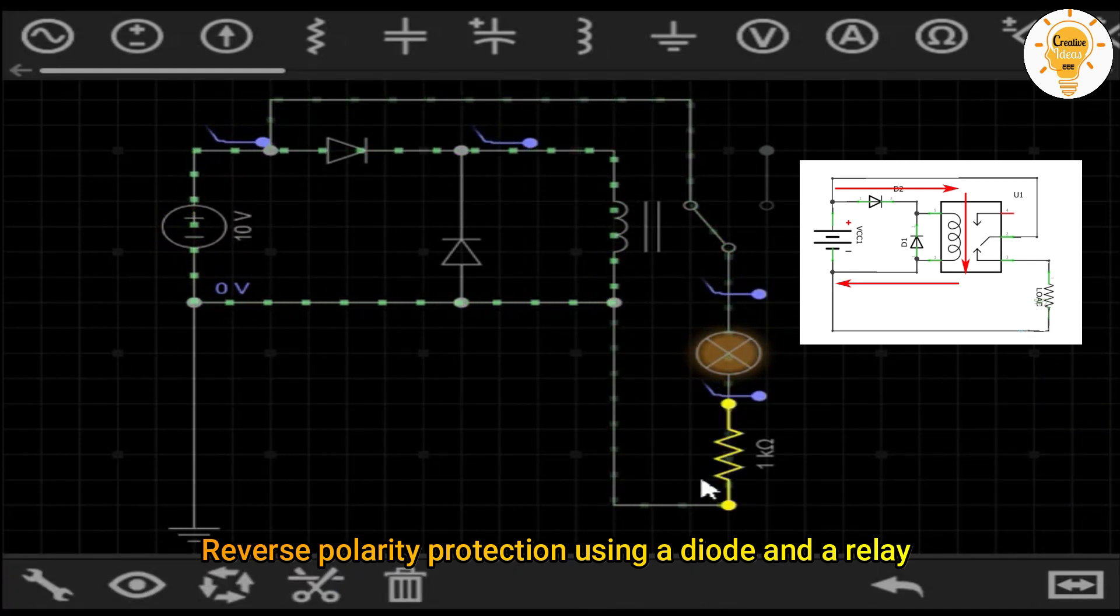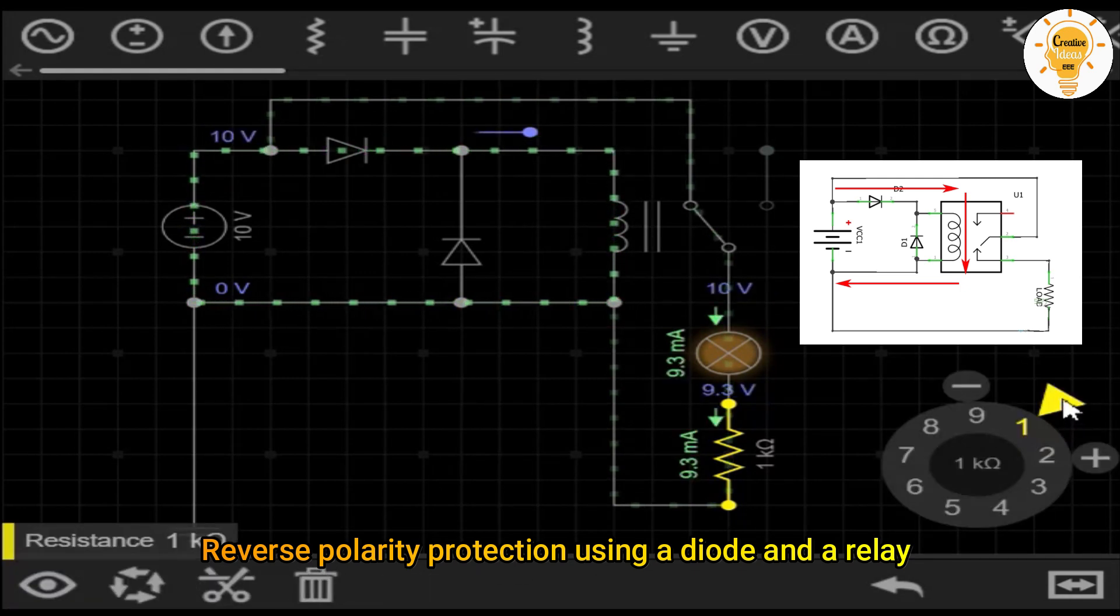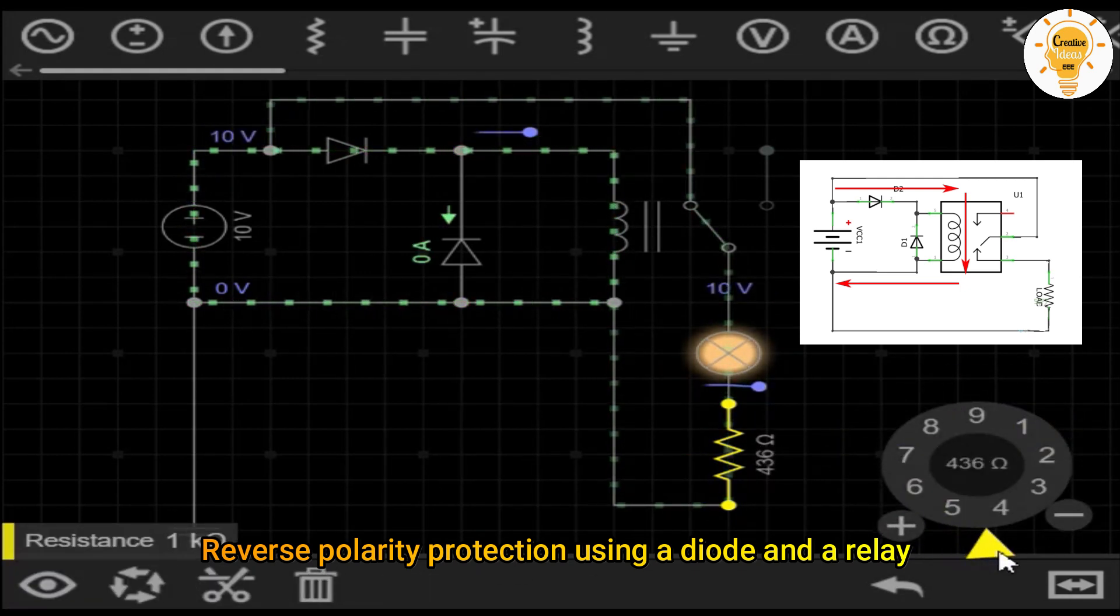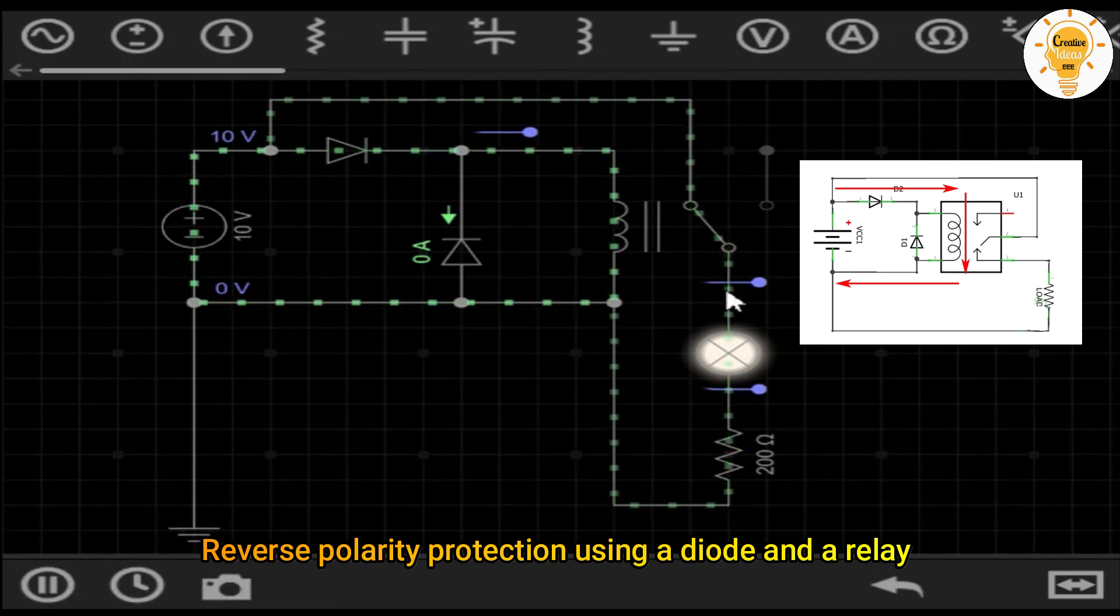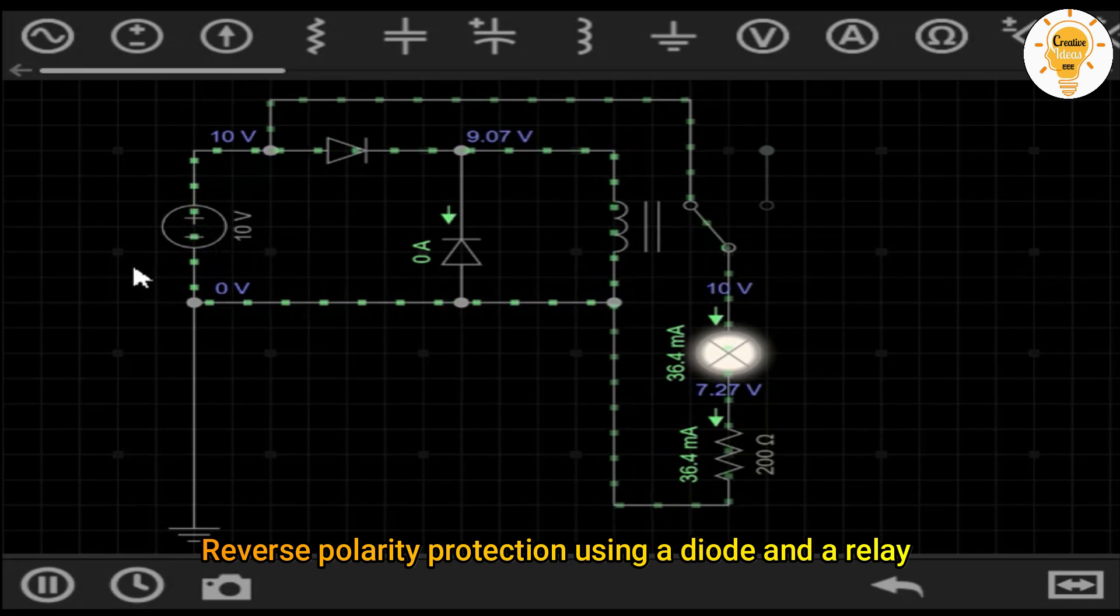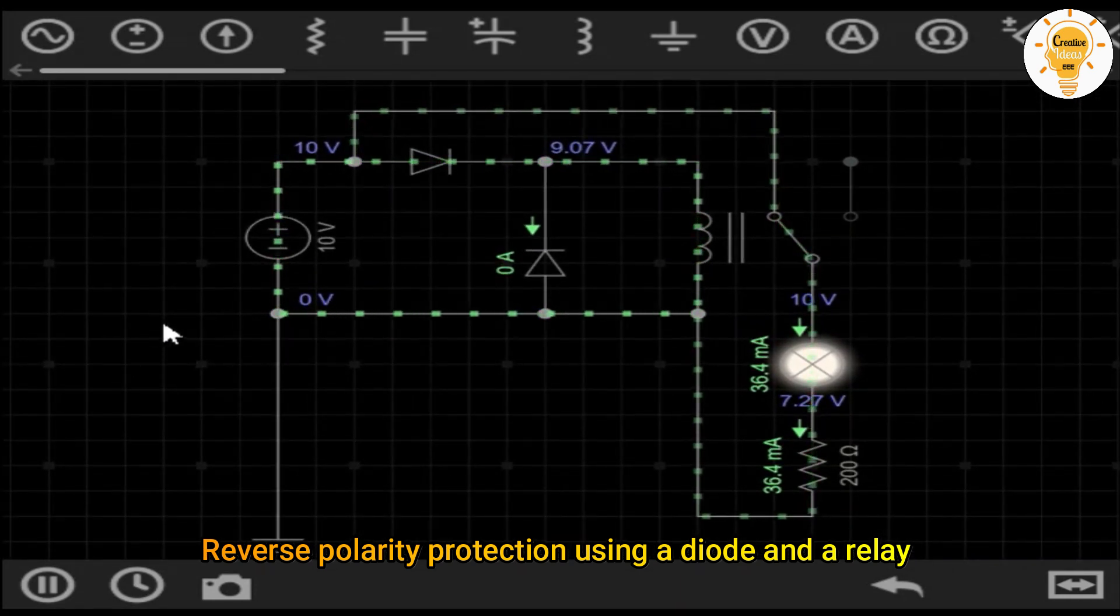If, on the contrary, we connect the power supply incorrectly, the diode will be reverse biased and will not let current pass. The diode that is in parallel with the relay does not affect operation. It is to protect the circuit from the voltage peaks generated by the relay coil.